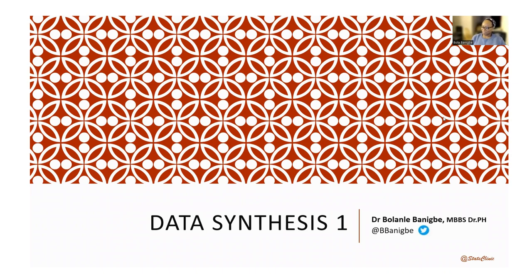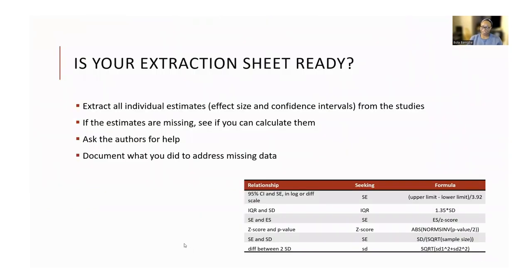Hi, everyone. Welcome to this session on data synthesis for your meta-analysis, where we'll discuss how you will go about putting all the data that you have extracted together and the sorts of decisions that you make along the way. Before the synthesis, you have to extract the relevant pieces of data from the individual papers, and you do this into an extraction sheet, which can range from something like an Excel sheet to fancy meta-analysis software.